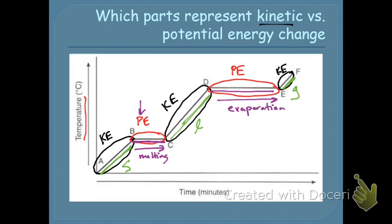One helpful memory trick: potential energy starts with a P and phase change starts with a P as well. Just know that these flat lines are where potential energy is changing. The flat parts are phase changes; whenever the temperature is changing, those are one of the three phases.